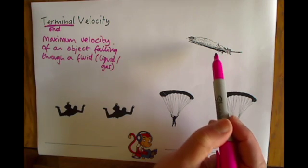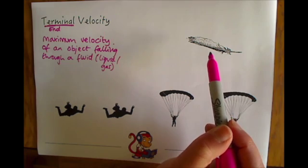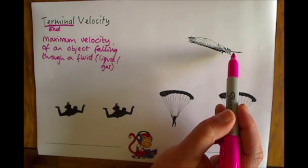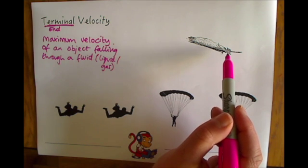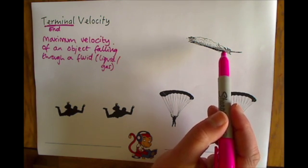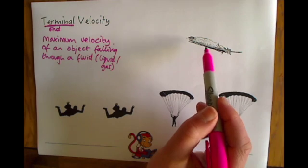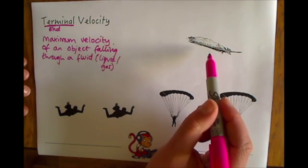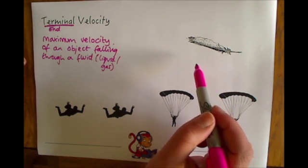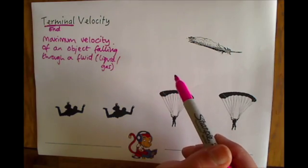If you imagine this little feather falling out of the air at 10,000 feet, it would be like a really super speedy needle falling out of the sky. So thank goodness that there is such a thing as terminal velocity. As this feather is falling, it will suddenly reach a final speed and it can't go faster than that final speed.